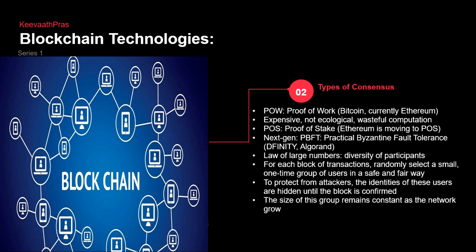In Bitcoin or blockchain, you need a large number of participants. For each block of transactions, it randomly selects a small group of people in a safe and fair manner — it's not necessary that you and your set of friends are going to be selected, because if you were always selected it becomes like lobbying. To protect from attackers, the identities of every person are actually hidden until the block is confirmed, because if someone's identity were known they could be bribed. The size of the group remains constant as the network grows.